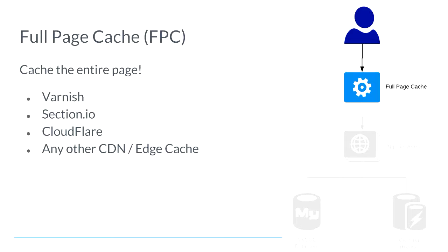Full page caching is generally deployed as a reverse proxy in front of the website. A request comes in — if it's in cache, the response goes straight out and we don't need to talk to our app servers. If it's not in cache, we proxy it to an app server, get the response back, and if the app server says we're allowed to cache it, we store it so that the next person gets a cached result very quickly.